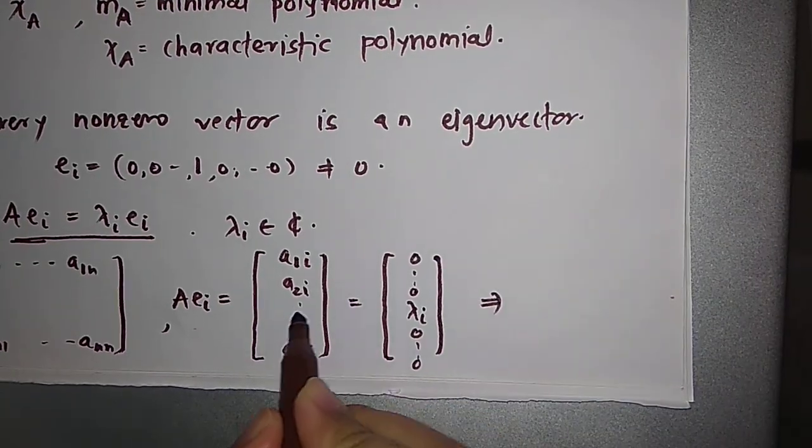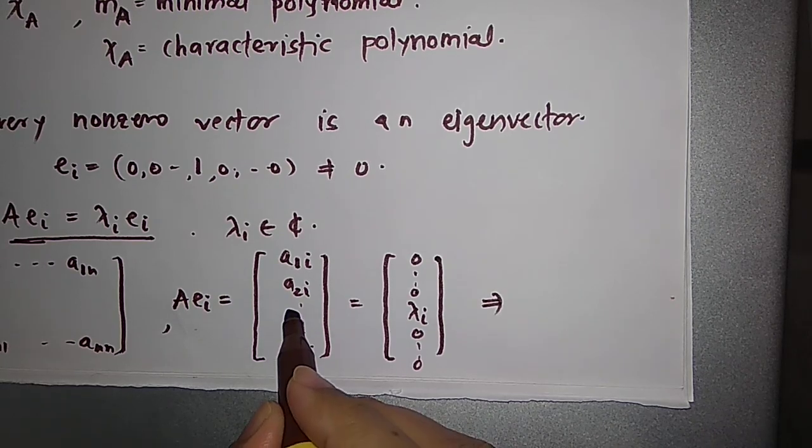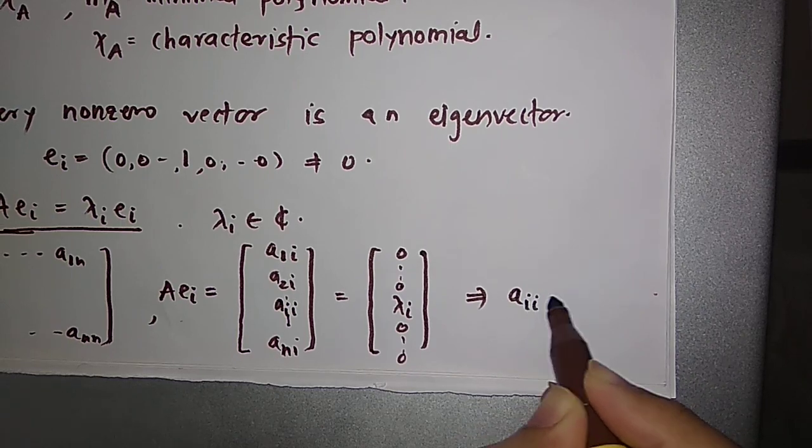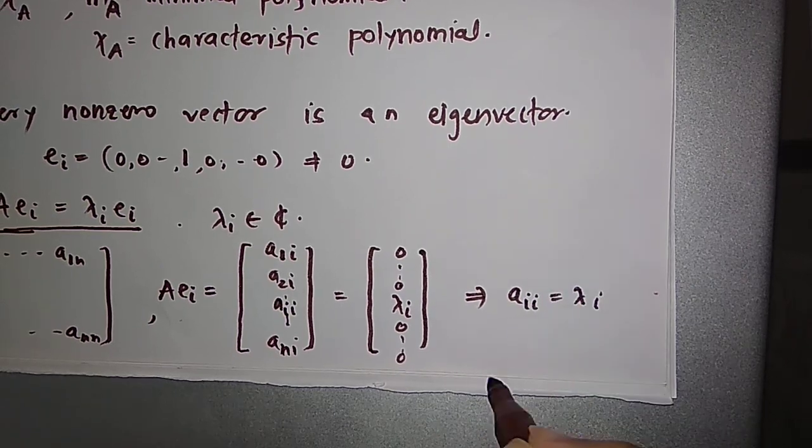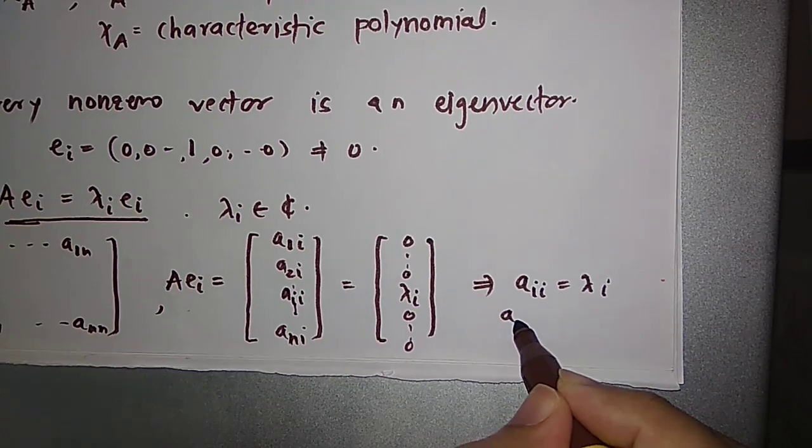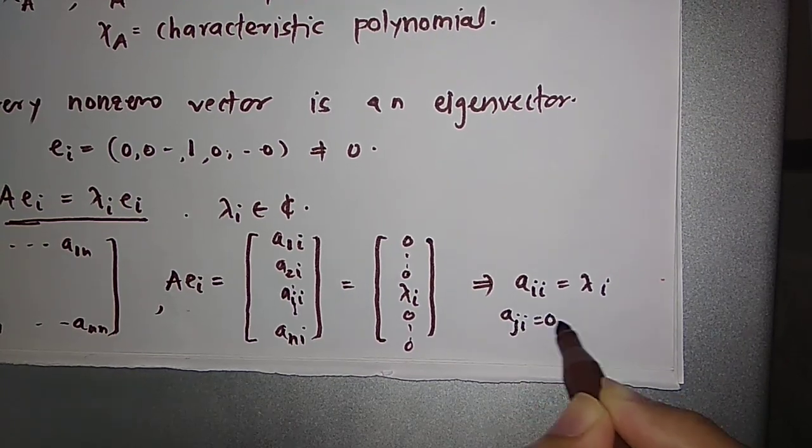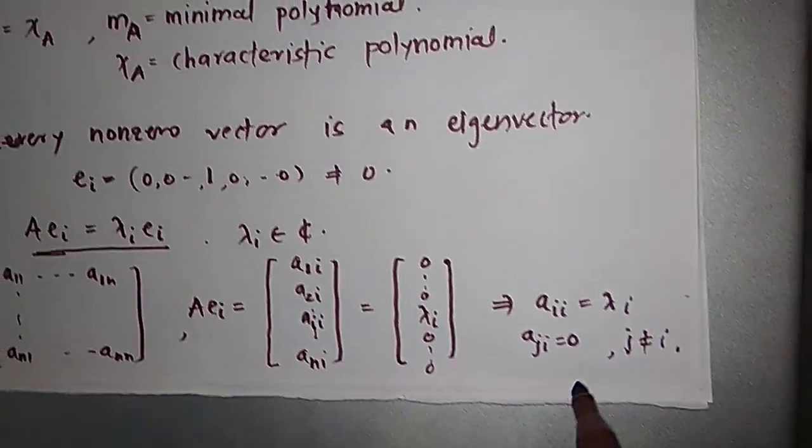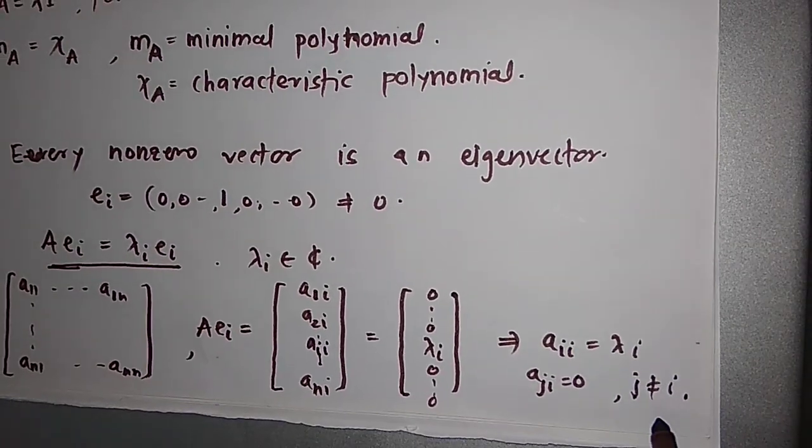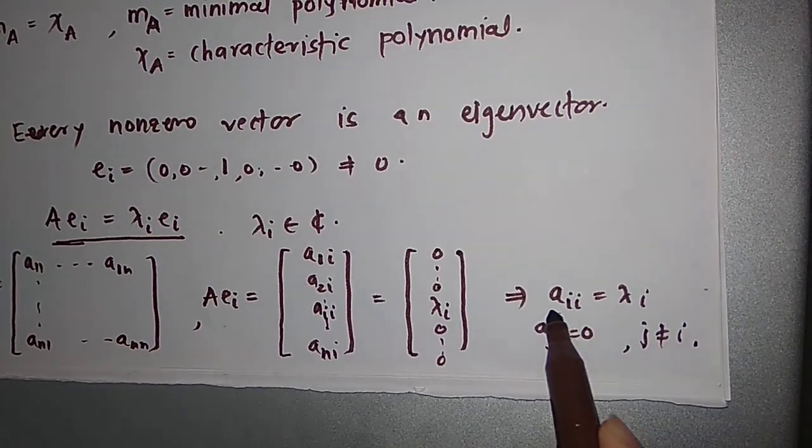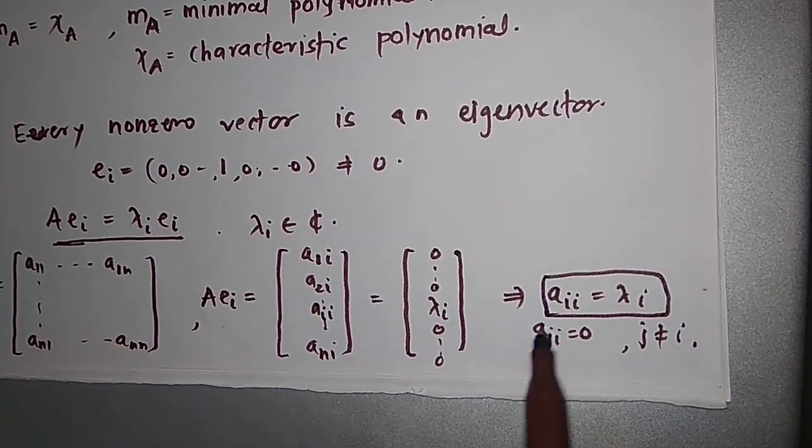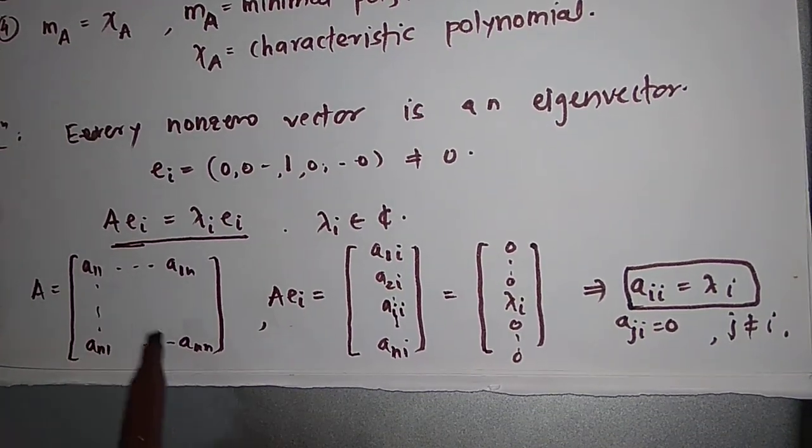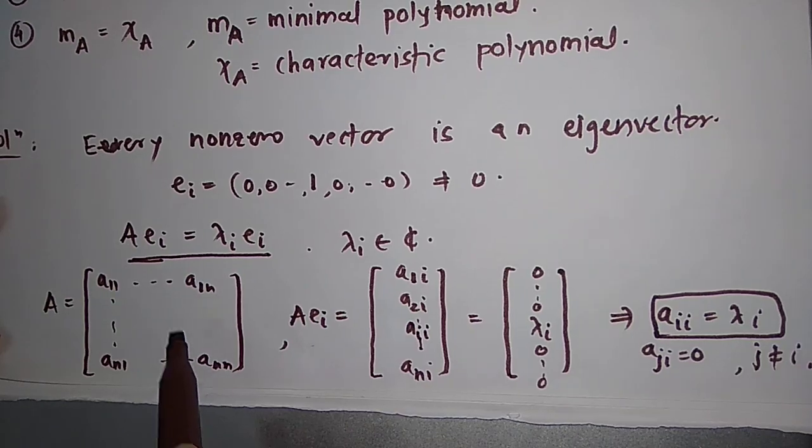This says that the A_ii entry is λ_i and all other entries are 0. A_ji will be 0 if j is not equal to i. What does that mean? A_ji is equal to 0 whenever j is not equal to i and only A_ii is λ_i. That means A must be a diagonal matrix because only diagonal entries are surviving here.